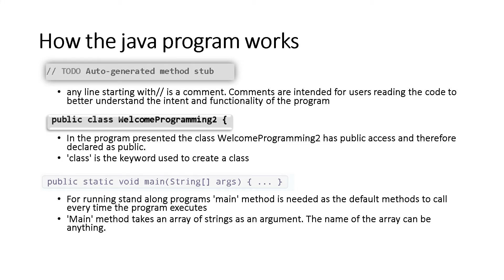How the program works. We have the auto-generated method right after the symbol double slash. Any line starting with double slash is a comment. Comments are intended for users reading the code to better understand the intent and functionality of the program. Whenever the compiler encounters a comment, it will not be included in the compilation — the compiler will not execute or read it. Anything placed after the double slash will not be compiled.